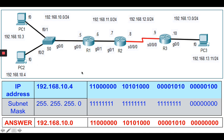As homework, try this: take 192.168.11.6 — the other interface of Router 1 — and check whether it belongs to the same network as PC1's default gateway. Convert 192.168.11.6 to binary and AND it with the subnet mask (24 ones, rest zeros). The result will be 192.168.11.0. Since 11.0 is not the same as 10.0, they do not belong to the same network, so you need a default gateway to route from one network to another.